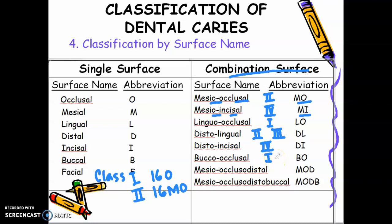Mesio-occluso-distal — MOD. That involves many surfaces, and this is class 2. You always have to determine first what tooth is involved — anterior tooth or posterior tooth — before you choose the G.V. Black's classification.